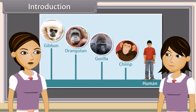Hey Sunita, look at this chart. What can you observe from this chart? It depicts that human, chimpanzee, gorilla and other two animals possess some similarities and differences.